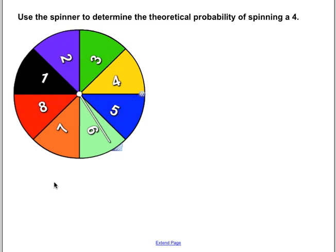Use the spinner to determine the theoretical probability of spinning a 4. All right, so if we look on the spinner, the spinner goes from 1 through 8. How many 4s are there? Well, there's only 1. So that's 1 out of how many total pieces in the pie? 8. And that is all you do.